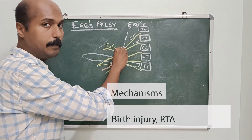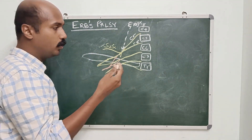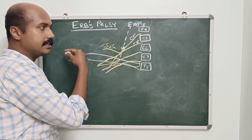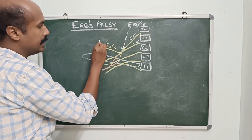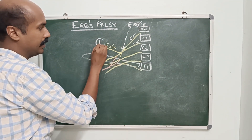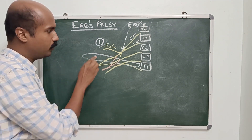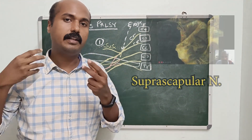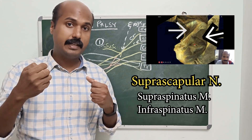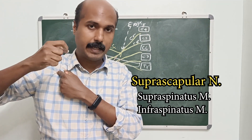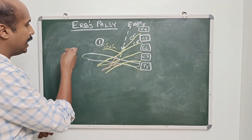When this point is stretched or injured, we need to know which nerves distribute C5 and C6 fibers. The first nerve is the suprascapular nerve, which emerges directly from the upper trunk and supplies the supraspinatus and the infraspinatus. The supraspinatus is an initiator of abduction of the shoulder, and the infraspinatus is a powerful lateral rotator.